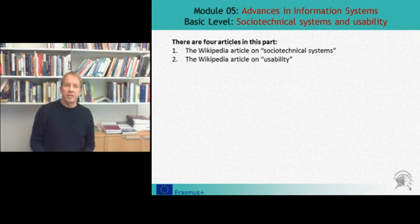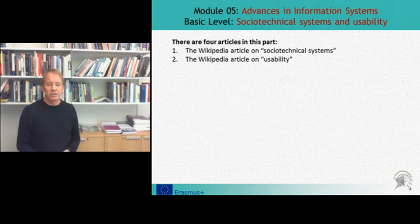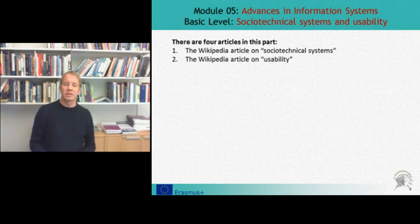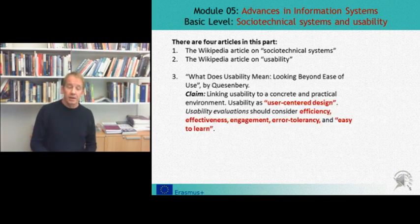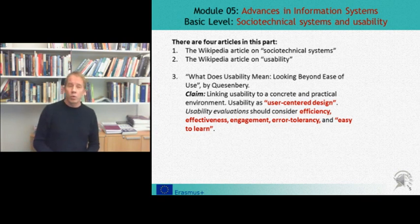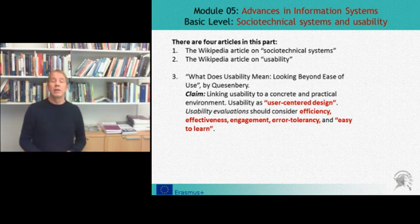There are three articles in this part of the basic level of Module 5. First, the two concepts we have mentioned are introduced in two Wikipedia articles on socio-technical systems and on usability. There is only one additional text in this issue area in Module 5, and that is the third article entitled 'What Does Usability Mean? Looking Beyond Ease of Use.'